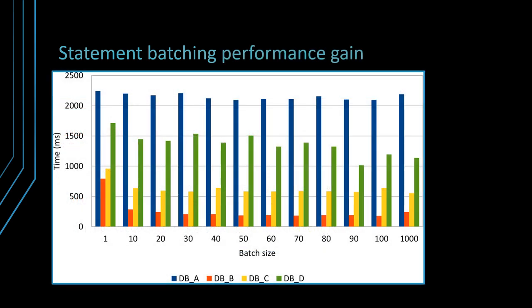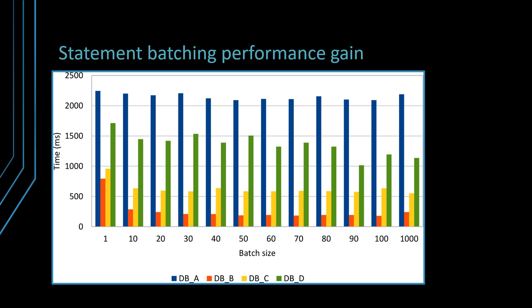The following graph depicts how different JDBC drivers behave when varying the JDBC batch size for plain JDBC statements. The test measures the time it takes to insert 1000 post rows, each post having 4 comments as well. Depending on the underlying relational database, batching plain statements is more or less effective.